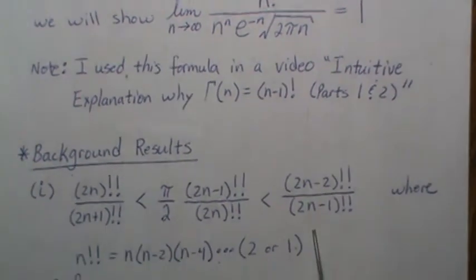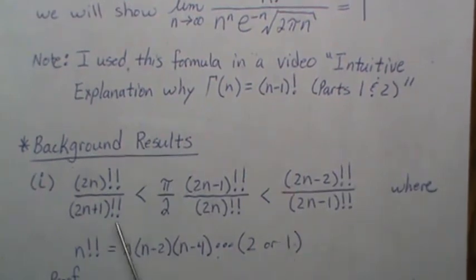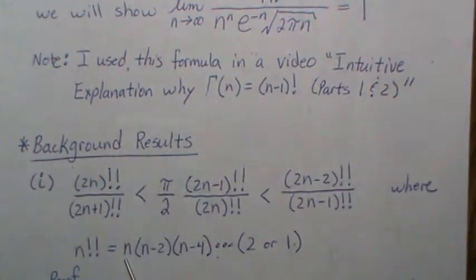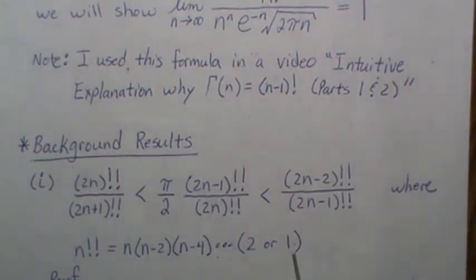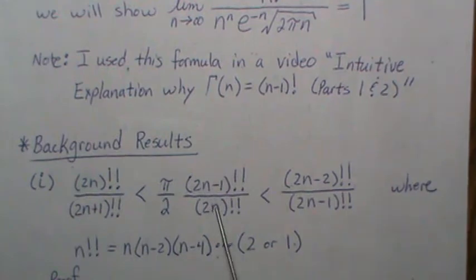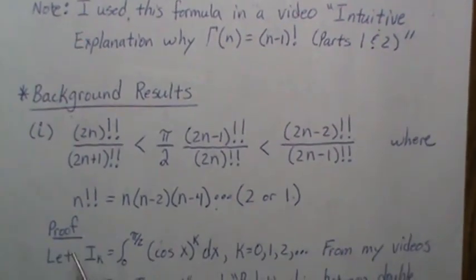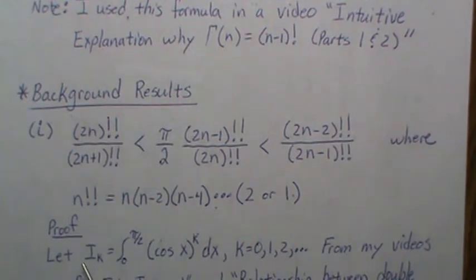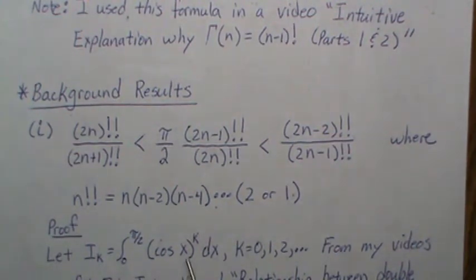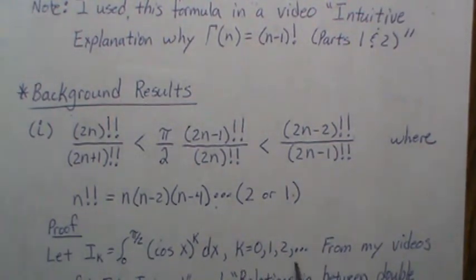The first part is to show that a certain inequality holds involving double factorials. Double factorials are like regular factorials except you go down by two: n times n minus 2 times n minus 4, continuing until you reach 2 or 1 depending on whether n is even or odd. We let I_k represent the integral of cosine of x raised to the k-th power, integrating from 0 to pi over 2, where k goes from 0, 1, 2, to infinity.